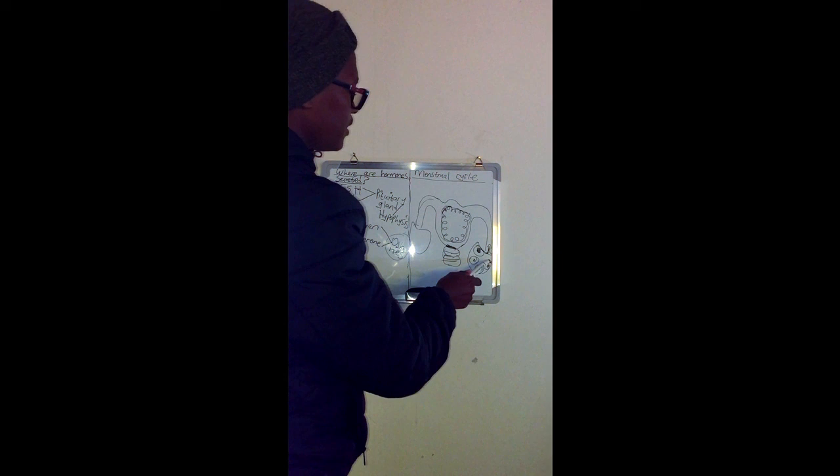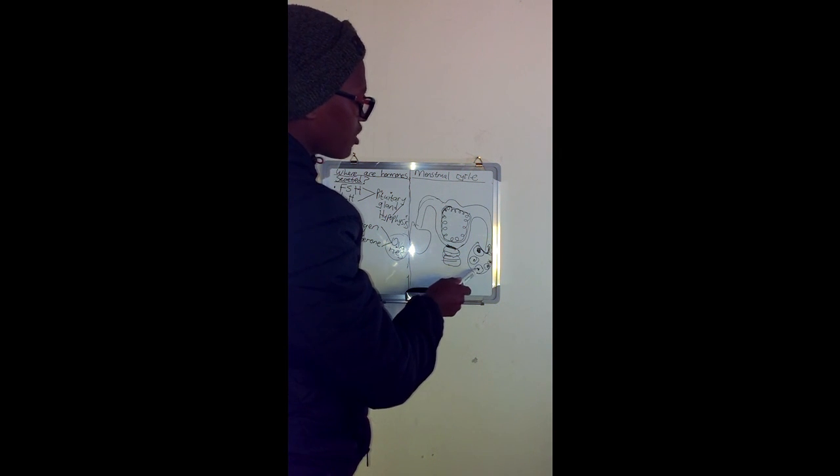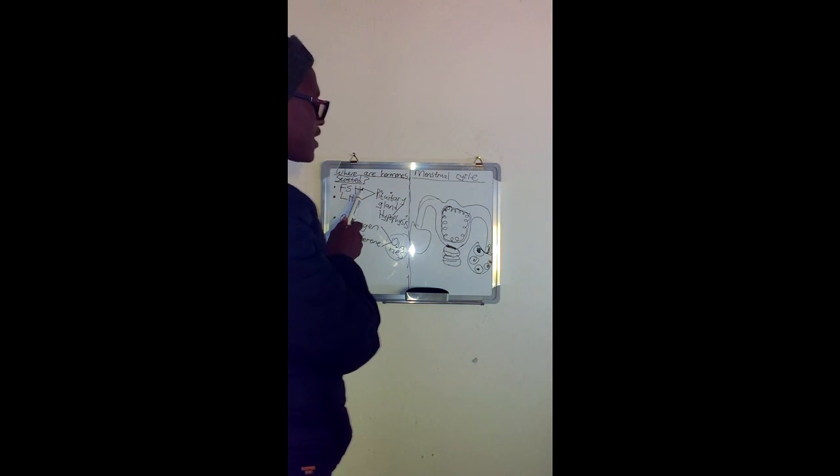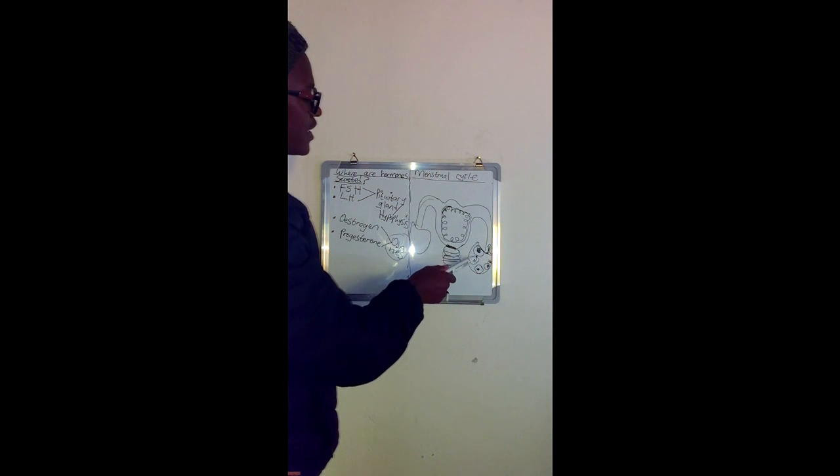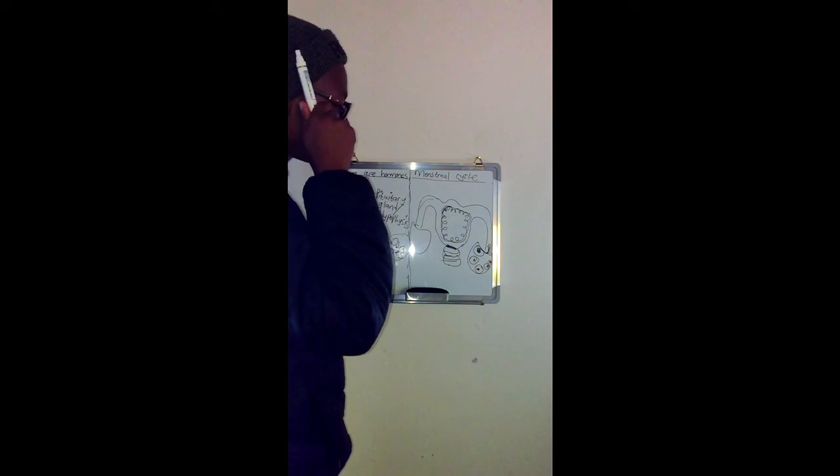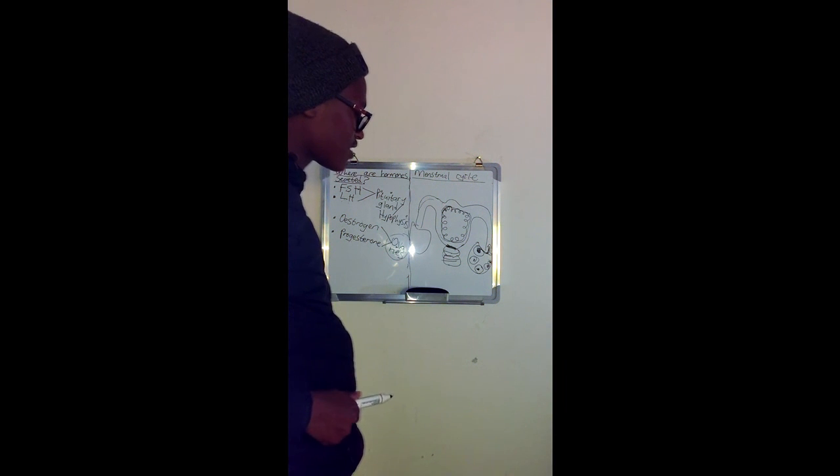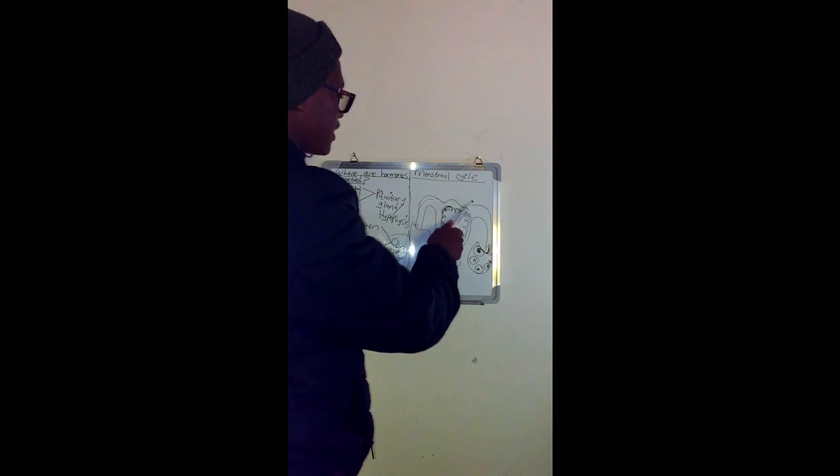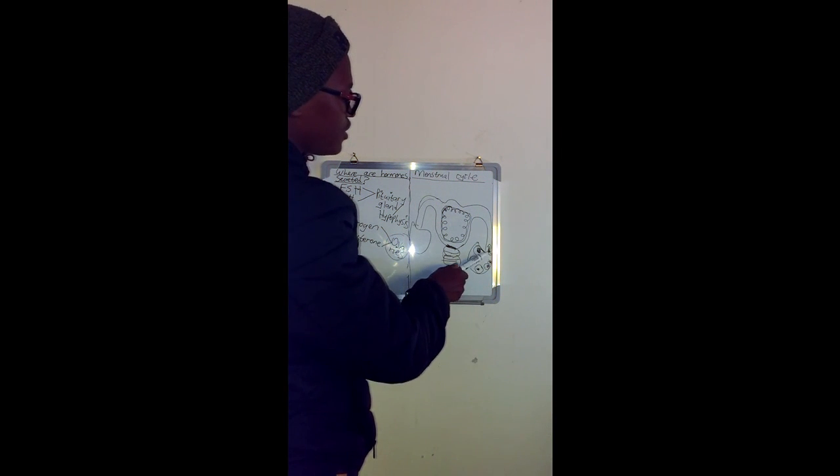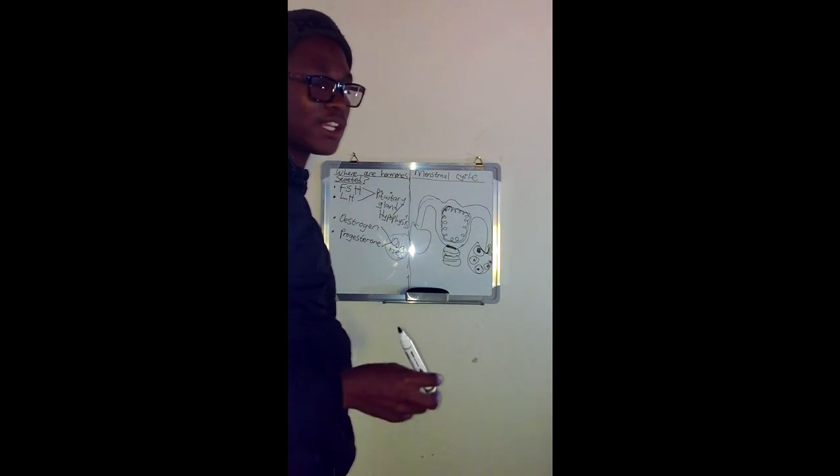The hormone FSH stimulates the development of follicles. So it means when FSH is secreted by the pituitary gland, it travels via the bloodstream from the brain until it reaches this reproductive structure. When it reaches the reproductive structure, it travels to the ovaries and targets the ovary.